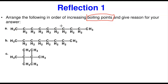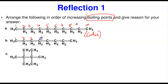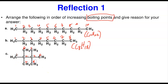Let's count the carbons. Compound A: one, two, three, four, five, six, seven, eight, nine, ten — this is decane, C10H22. Compound B: one, two, three, four, five, six, seven, eight — this is C8, so C8H18 (8×2+2=18). Compound C also has eight carbons, so its formula is also C8H18. This tells us C is a structural isomer of B. Now you know compound A is the longest and will have the highest boiling point based on highest molecular weight.